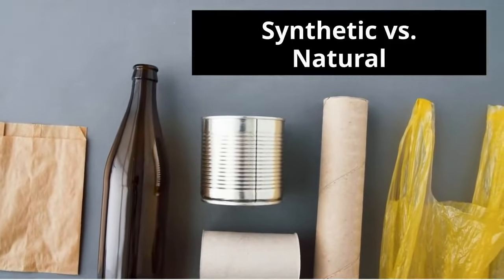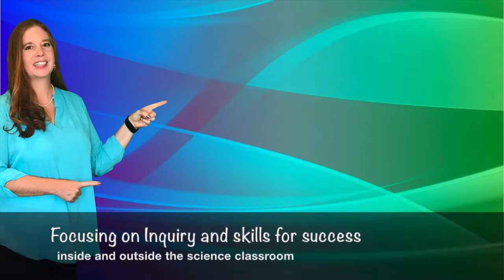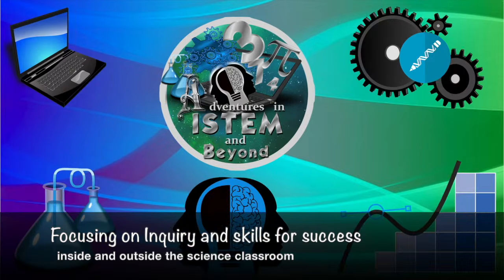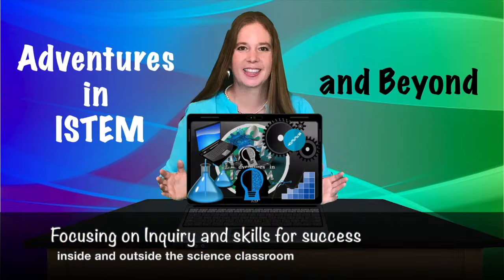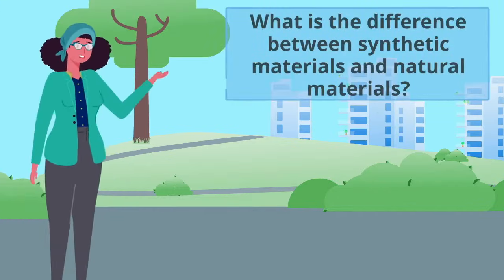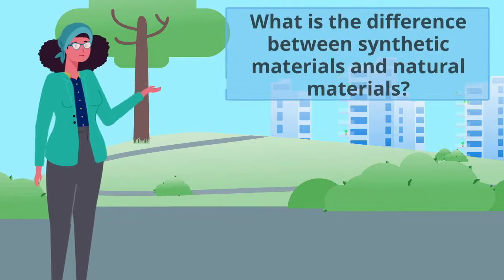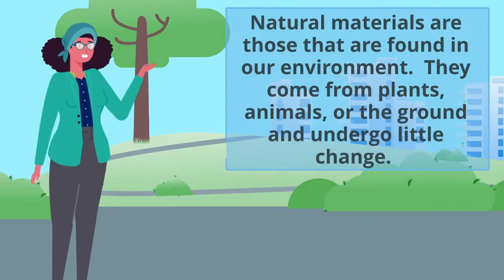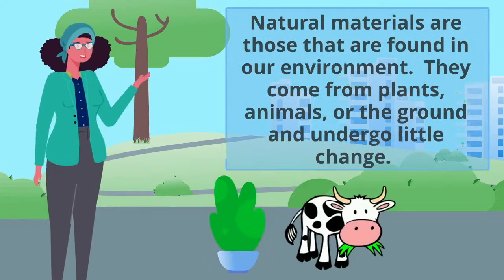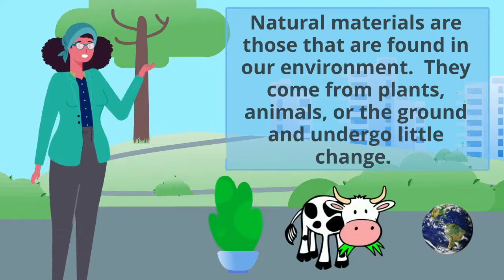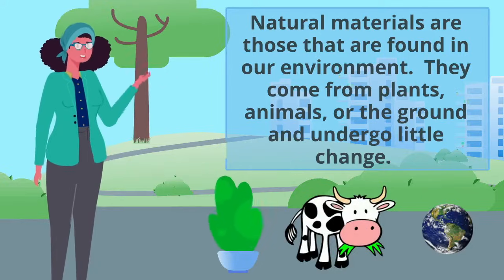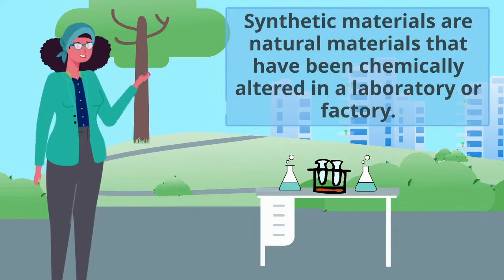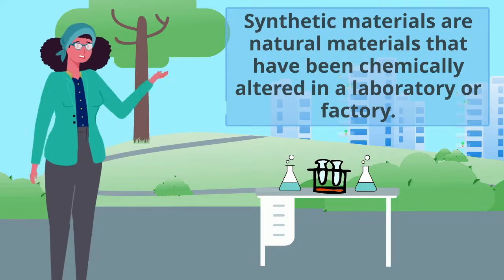Synthetic vs. Natural. What is the difference between synthetic materials and natural materials? Natural materials are those that are found in our environment. They come from plants, animals, or the ground and undergo little change. Synthetic materials are natural materials that have been chemically altered in a laboratory or factory.